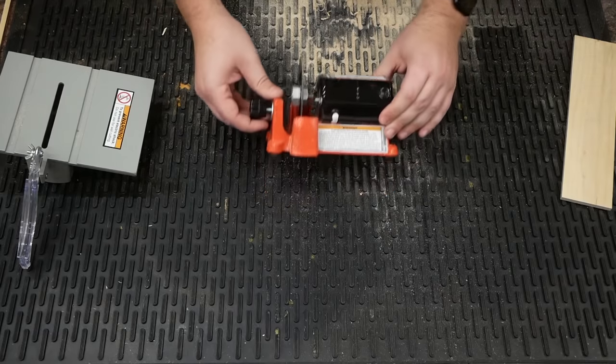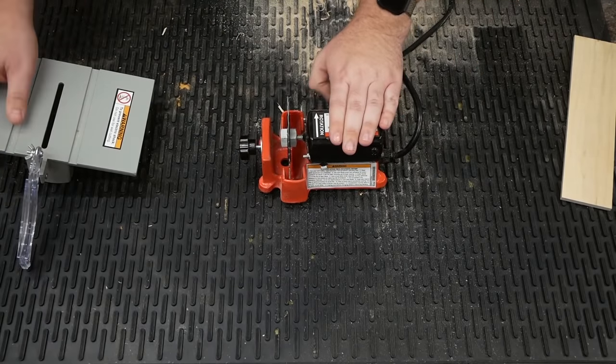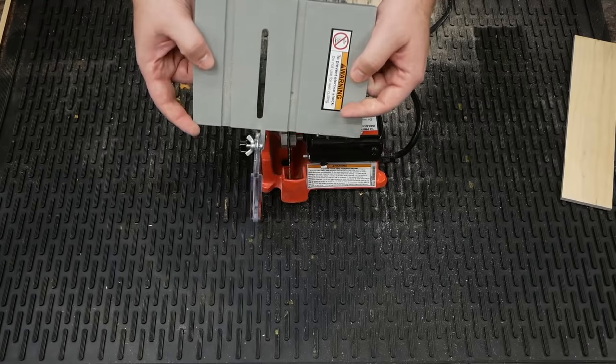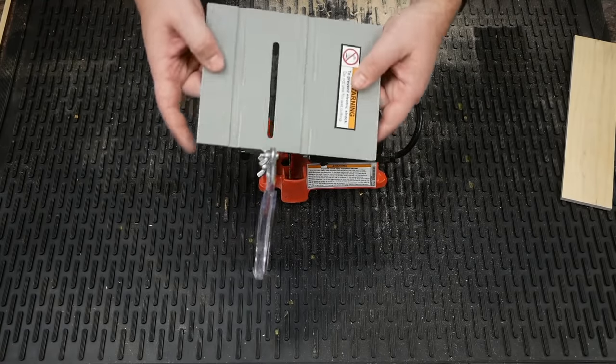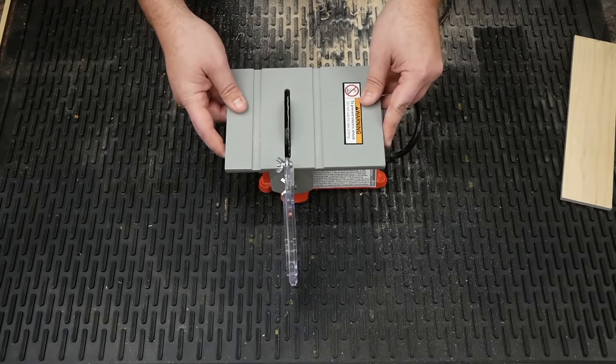The base is made out of cast iron, surprisingly. It's rather hefty. There's a little universal brushed motor here, and the table is made out of, I don't know, aluminum? Maybe. It's surprisingly straight. And that's all there is to it.